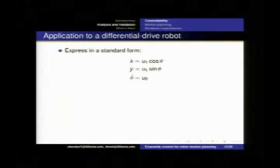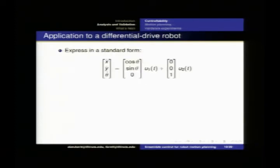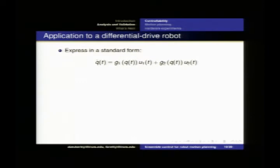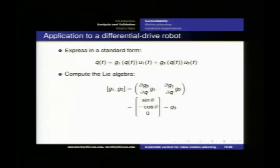With the differential drive robot, we start with the same system of equations where U1 is forward velocity and U2 is the turning command. The forward command is our controllable vector field G1, and the turning command is G2. I compute the Lie algebra of that set, and when I take the Lie bracket, I get a new controllable vector field G3, which is actually orthogonal to the first two. Since they're all orthogonal, the span of my vector fields is now three, which means I can span my entire state space of X, Y, and heading.